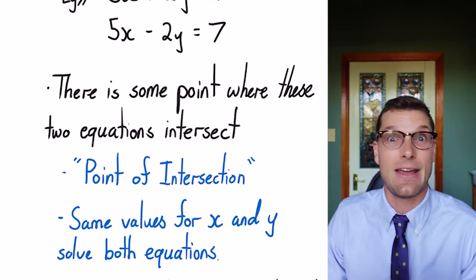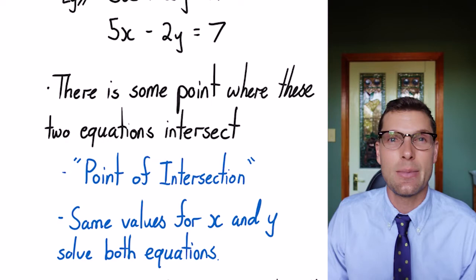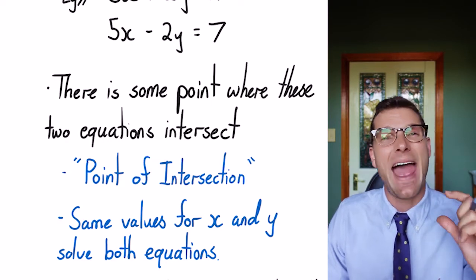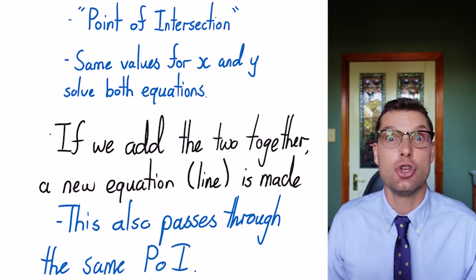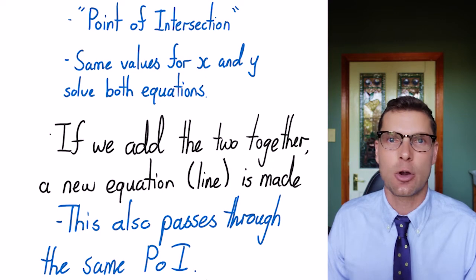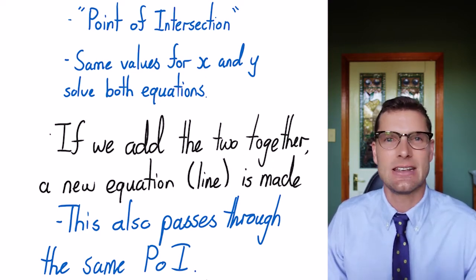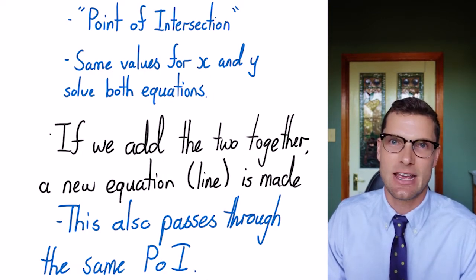So if you can do it graphically, that definitely helps out. It might actually make your life a little bit easier. But with this elimination trick, what we're doing is we're adding both of these together. And what that does is it makes a new line. So we've got our two simultaneous linear equations, and when we add them together, the line that's made goes through that same point of intersection.